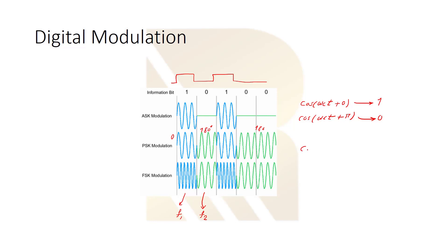So here we say cosine(ω1*t + φ). Initial phase, it can be 0 or not, but phase doesn't change. Cosine(ω2*t), different frequency. When we have data 1, we send this one. When we have data 0, we send this one. So this is digital modulation.